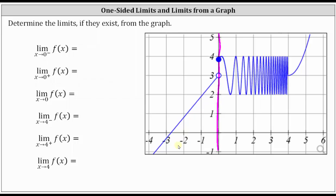To determine the limit of f of x as x approaches zero from the left or negative side, we are approaching x equals zero from the left side, meaning in this direction here. Notice as we get closer and closer to zero from this direction, we are approaching the y value or function value of three, which is the value of the one-sided limit. The limit of f of x as x approaches zero from the left or negative side is three.